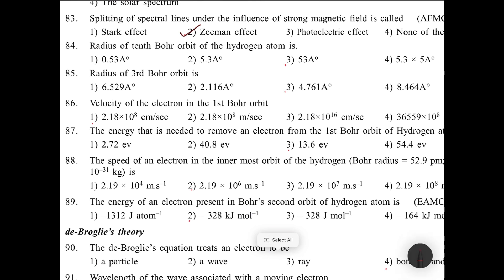Radius of 10th Bohr orbit of hydrogen atom: r = 0.53 × n²/z. For 10th orbit, n=10, so 10² = 100, which means it is 53 angstroms. Radius equals 0.53 × n²/z angstrom units.